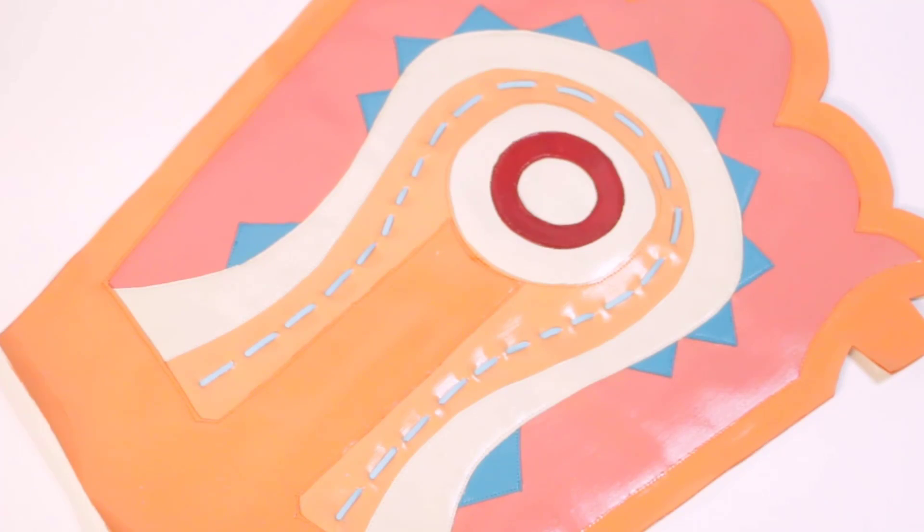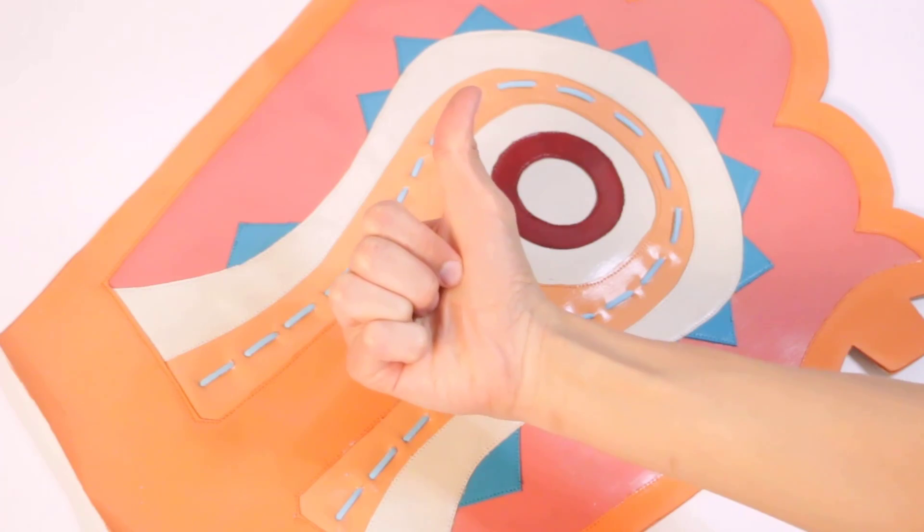Once all of my fingers had finally stopped cramping from threading that suede lace, I added a layer of buckram to help the quiver keep its shape, as well as another piece of orange leather to serve as the lining and sewed all around the outermost edge.